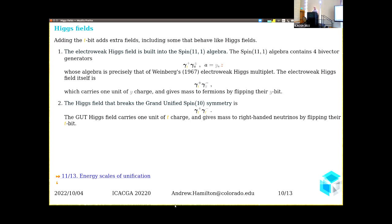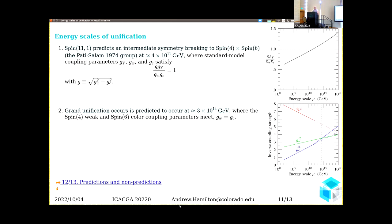Essentially without doing anything, the Higgs field that breaks the grand unified Spin(10) symmetry turns out to be the bivector product of the time vector and its spatial companion. That turns out to carry one unit of T charge and is able to give the right-handed neutrino a Majorana mass by flipping their T bit. Only the right-handed neutrino is allowed to do that because only it has no standard model charge. That's nice because the right-handed neutrino really needs—if you give it a mass, it solves, through the seesaw mechanism, the problem of where neutrino masses come from.